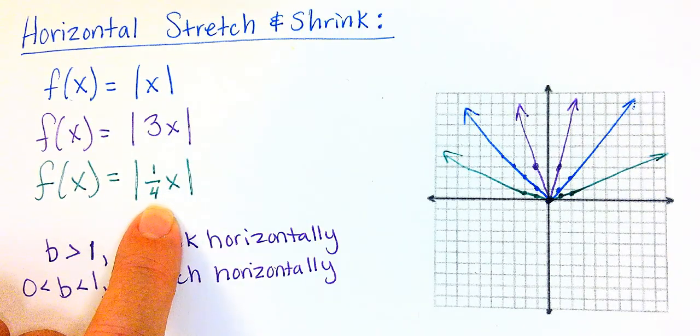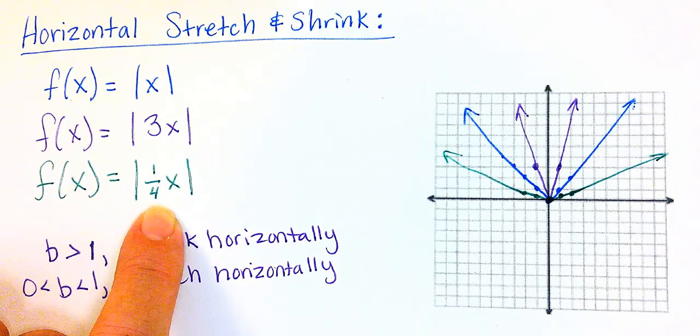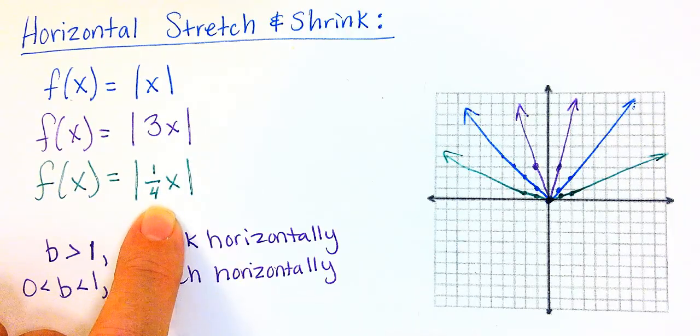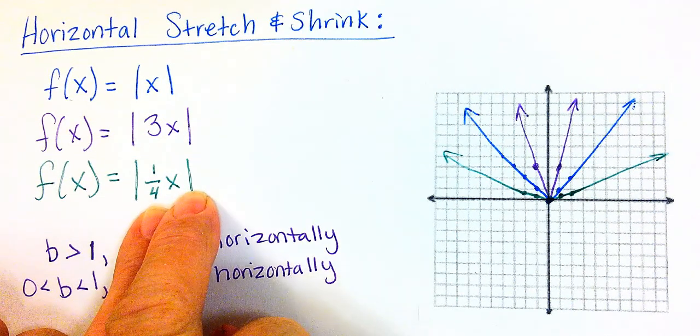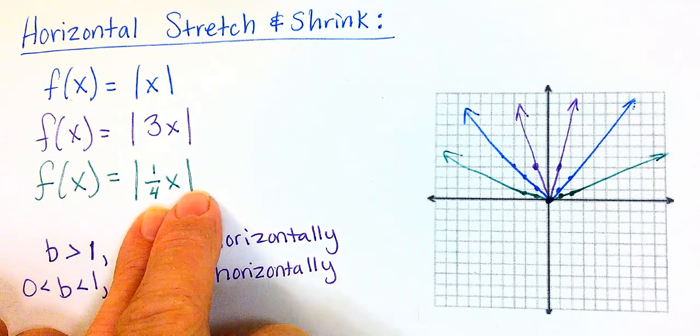Again, notice that the number is inside the function. So it's not outside the absolute value. It's inside the absolute value. And we're looking at this horizontally.